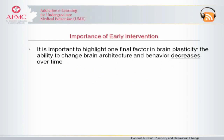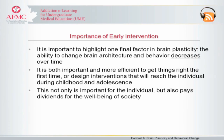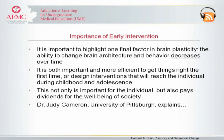Finally, it's important to highlight one final factor in brain plasticity: the ability to change brain architecture and behavior decreases over time. It is both important and more efficient, therefore, to get things right the first time — or design interventions that reach the individual during childhood and adolescence. This not only matters for the individual but also pays dividends for the well-being of society. Dr. Judy Cameron, a professor of physiology and pharmacology at the University of Pittsburgh, explains.